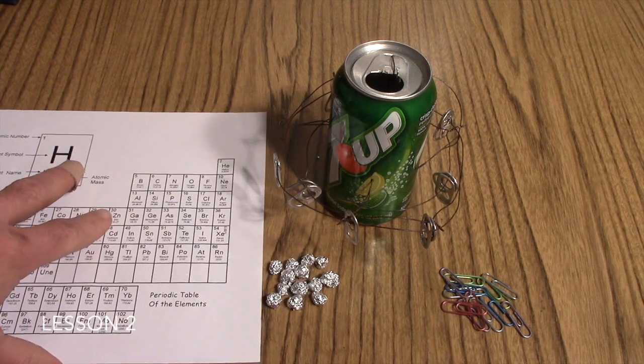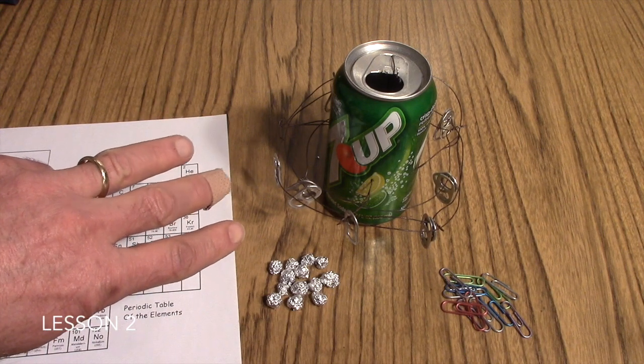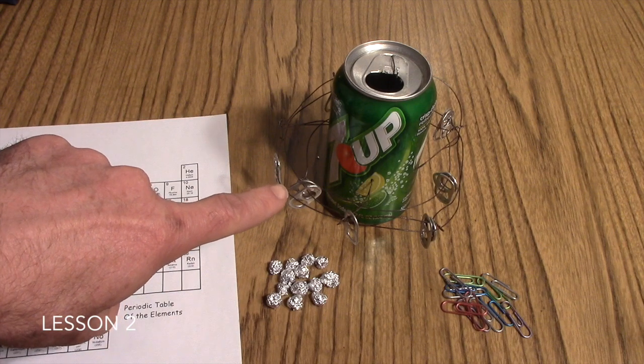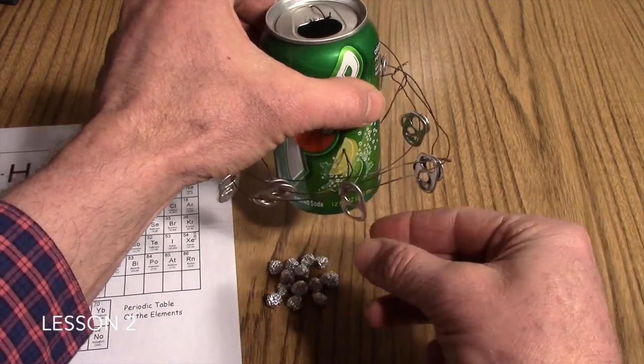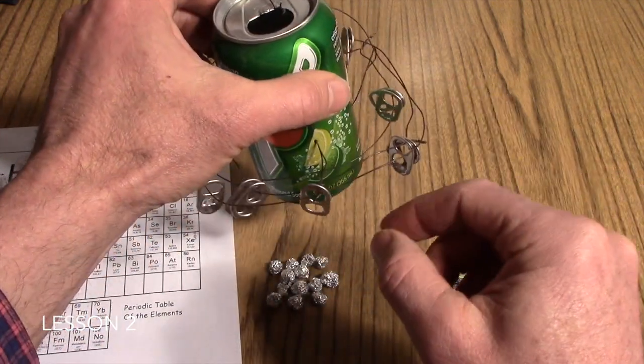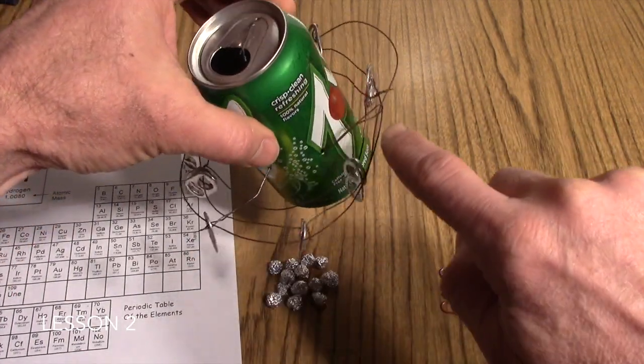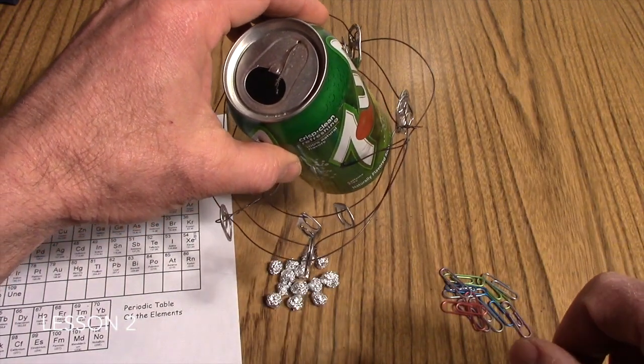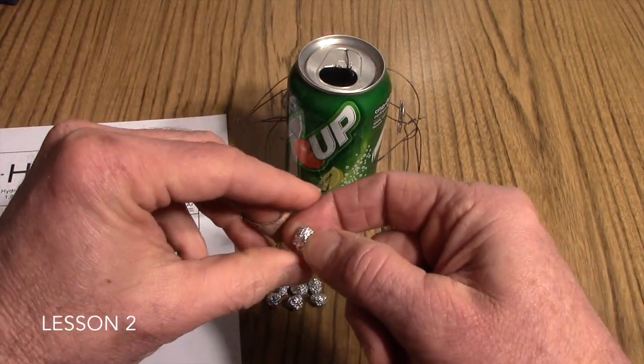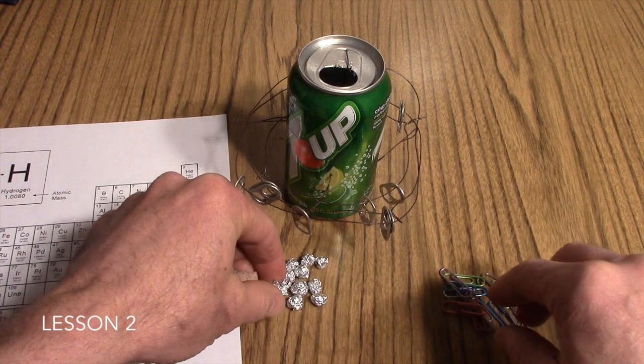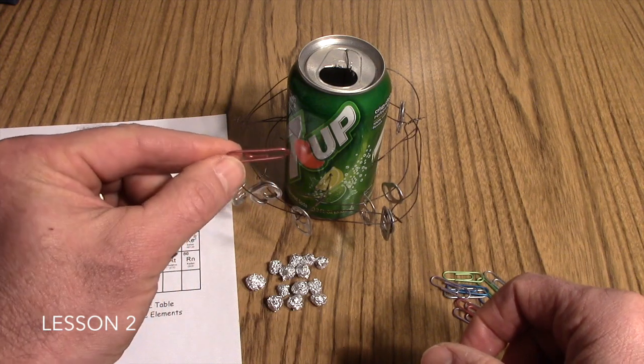The model that you require your students to make should have three main parts representing the three subatomic particles of that element. In the case of aluminum here, the student first took ring tabs from the top of the pop cans and created 13 electrons which were circling around the nucleus of their model. To make the neutrons and protons, they used aluminum foil and paper clips which are usually made partially out of aluminum.